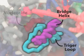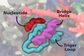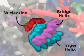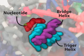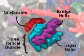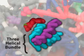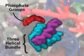The presence of the nucleotide in the active site induces conformational changes so that the trigger loop folds into the trigger helix, shown in light blue. The trigger helix interacts with the bridge helix, shown in magenta, to form a three helical bundle. Formation of the trigger helix-bridge helix bundle may alter interactions with the phosphate groups so that the nucleotide moves to the insertion state.